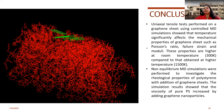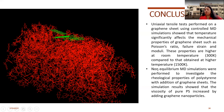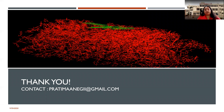In conclusion, uniaxial tensile tests performed on graphene sheet using controlled MD simulation showed that temperature significantly affects the mechanical properties of graphene, such as Poisson's ratio, failure strain, and moduli. These properties are higher at room temperature 300 Kelvin compared to those at higher temperatures up to 1500 Kelvin. Non-equilibrium MD simulations were performed to investigate the rheological properties of polystyrene with addition of graphene sheet. Results showed that the viscosity of pure polystyrene increased by adding graphene nanoparticles. Thank you.